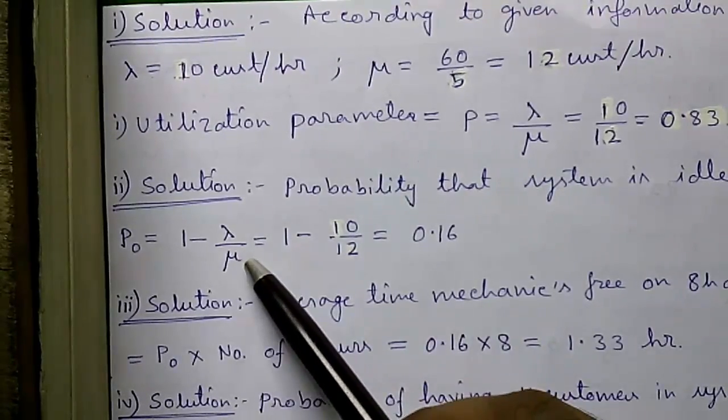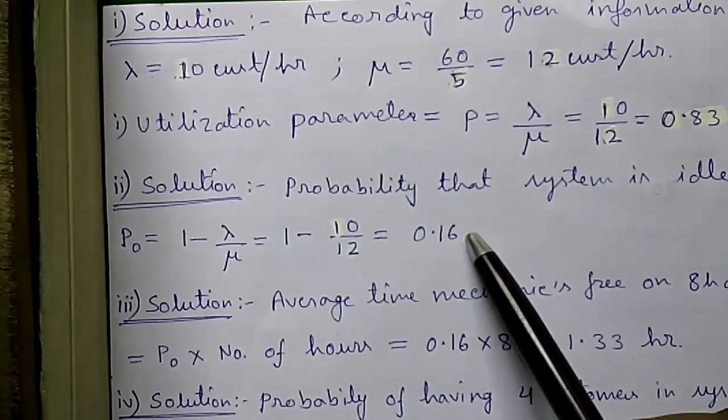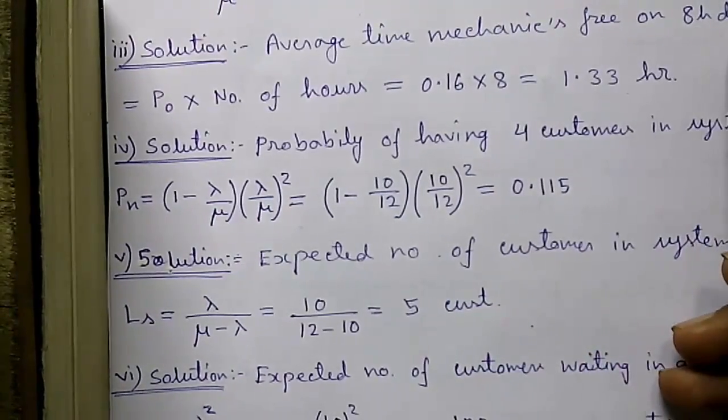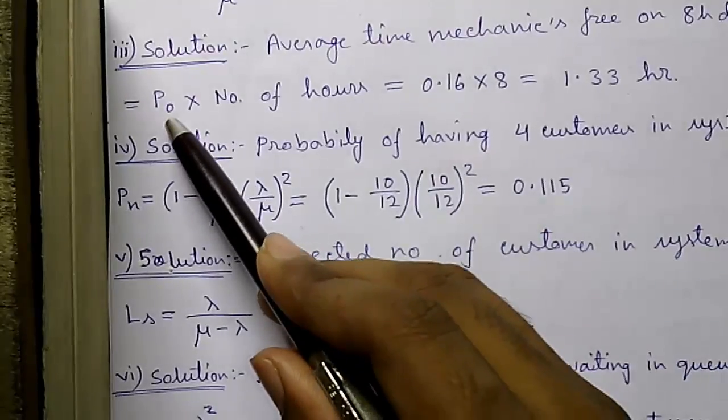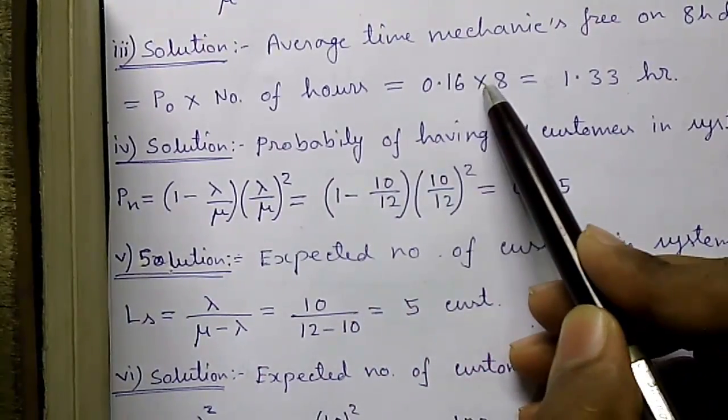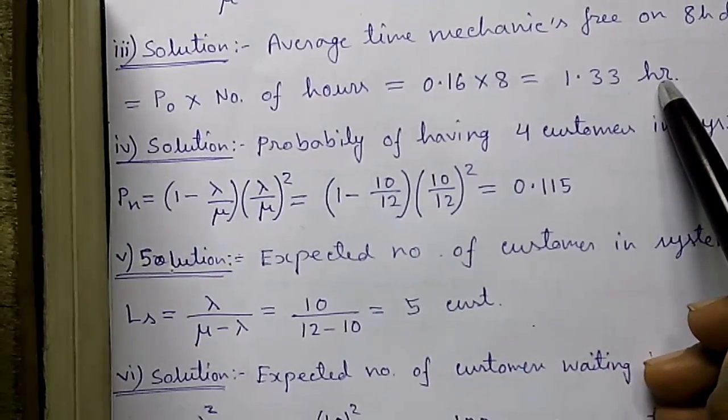Solution of two: probability that the system is idle is given by P0 equals 1 minus lambda by mu which is 1 minus 10 by 12 equals 0.16. Solution of question number three: average time mechanic is free in an 8-hour day is given by P0 into number of hours. So P0 was 0.16 into 8 which is 1.33 hours.